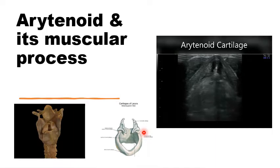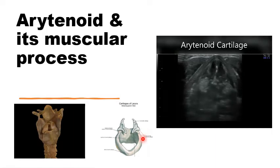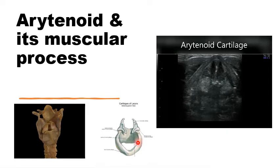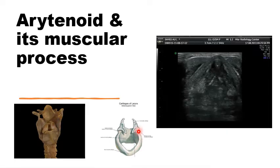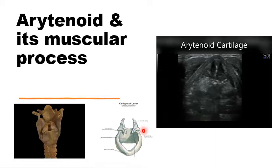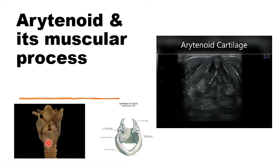The muscular process overrides the edge of the cricoid ring. To its anterior part will be inserted the lateral cricoarytenoid muscle — this is the major adductor that closes up the glottis. To the posterior part of the muscular process, seen in this posterior view, would be the insertion of the posterior cricoarytenoid muscle.